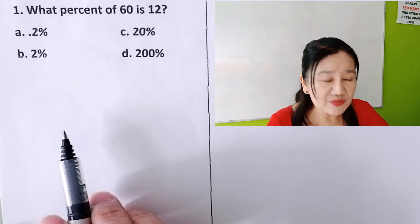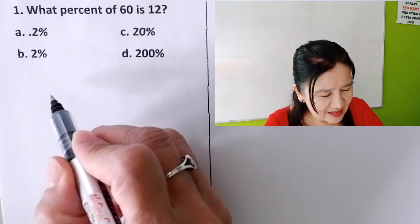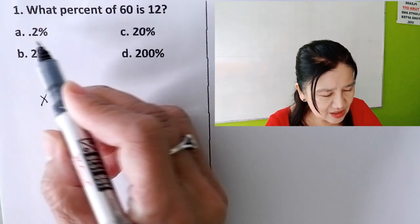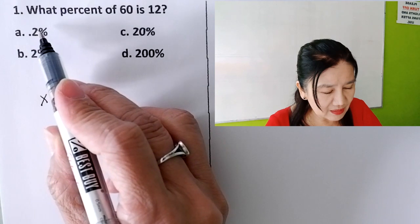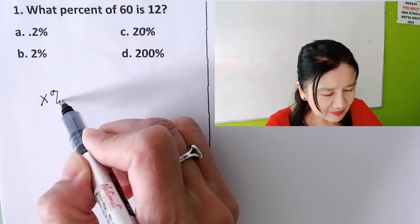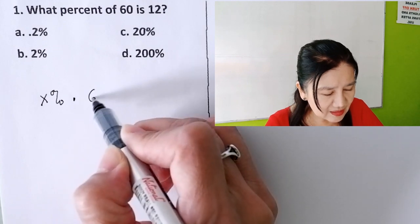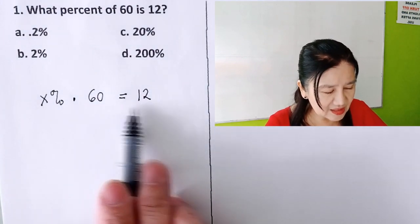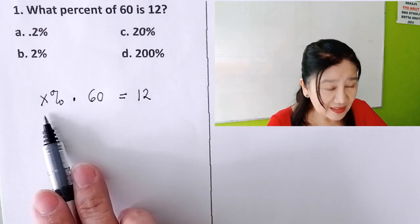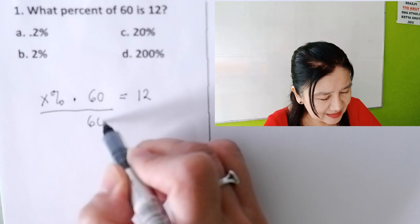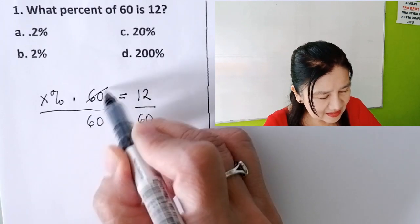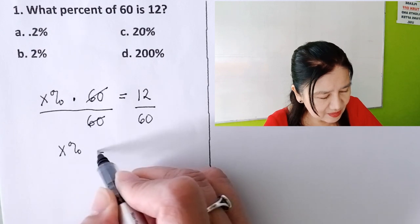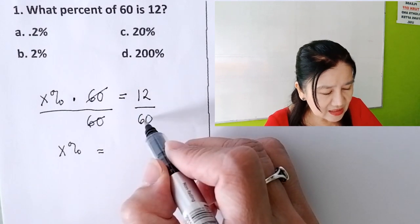Let's start. Problem number one: what percent of 60 is 12? In this case, I do it like this — what is x? I just follow the statement: what is x percent? So percent of is times 60, equals 12. Repeat: what percent of 60 is 12? And then isolate x percent, so you divide both sides by 60.